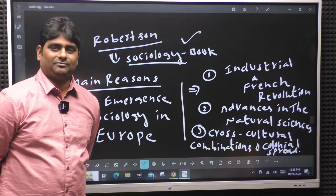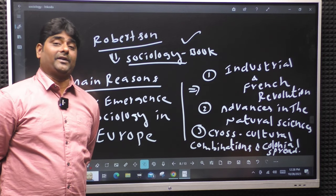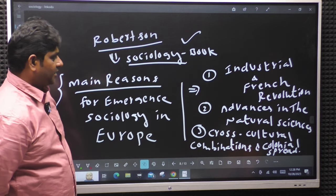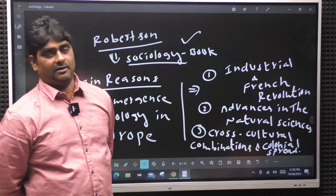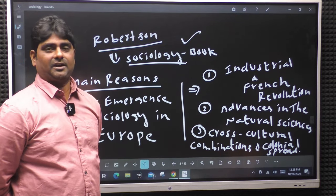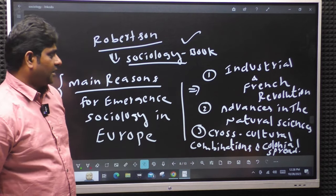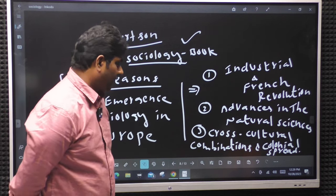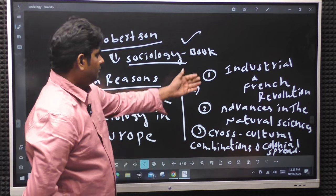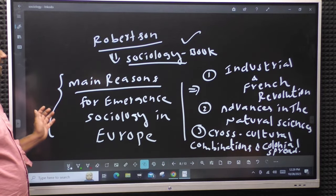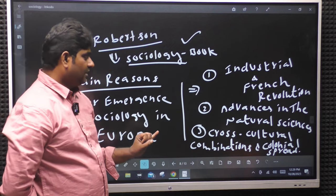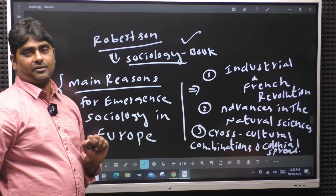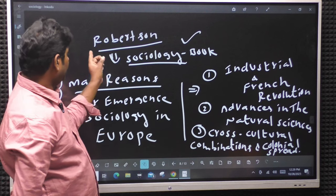The French Revolution started in 1789. The change of natural science was important. The colonial spread and cross-cultural combinations were also factors. These three reasons - industrial revolution and French Revolution, change of natural science, and cross-cultural spread - are important. Robertson outlined these reasons for the emergence of sociology in Europe.